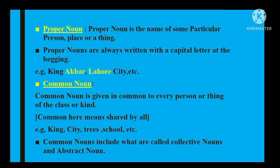Yahan examples hain: 'King' — badshah koi bhi ho sakta hai, yeh ek attribute hai is liye koi bhi badshah ho sakta hai, yeh common noun consider hoga. Isi tarah 'city' — bohot saari cities hain, agar iske saath koi naam hota to yeh particular ban jaata. Isi tarah 'trees' bhi common paaye jaate hain, aur 'school' bhi common noun hai.